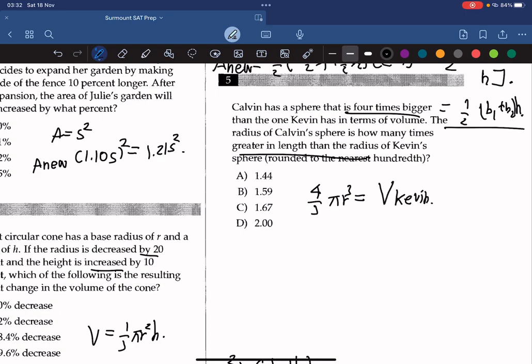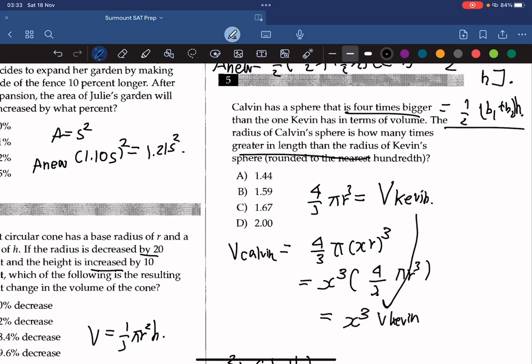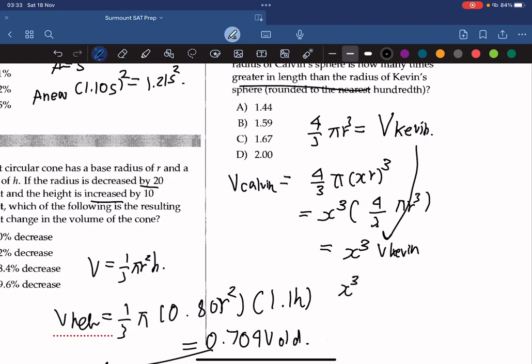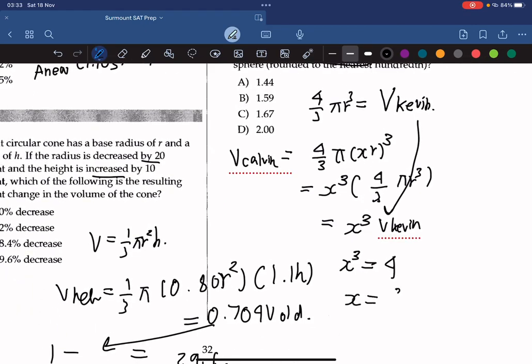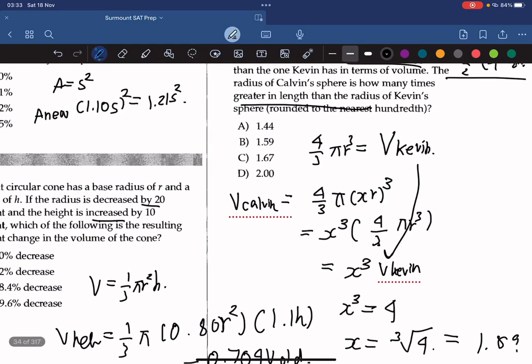So we're trying to find the radius of Calvin, right? So we can write this as 4 over 3 pi XR cubed, which can be rewritten as X cubed times 4 over 3 pi R cubed, which is equal to X cubed V Kevin. And X cubed must be equal to 4 because it's 4 times bigger. And so X is equal to 1.59. So the answer is B.